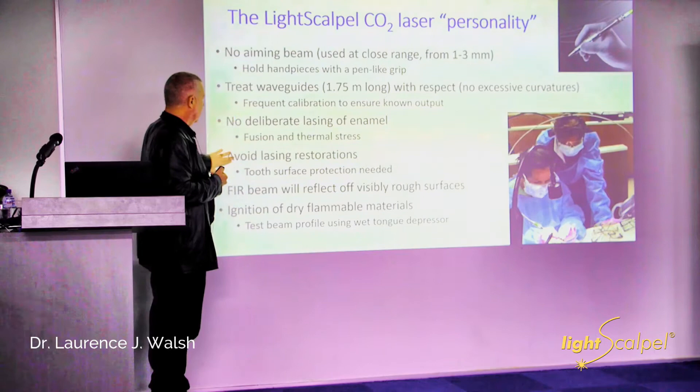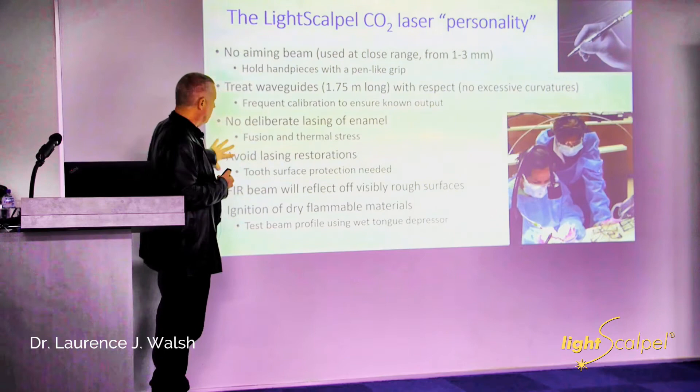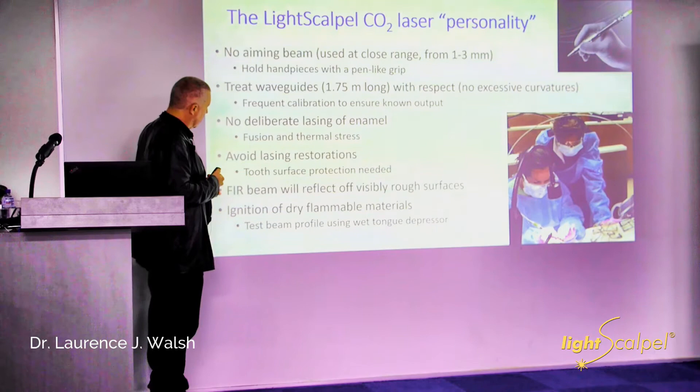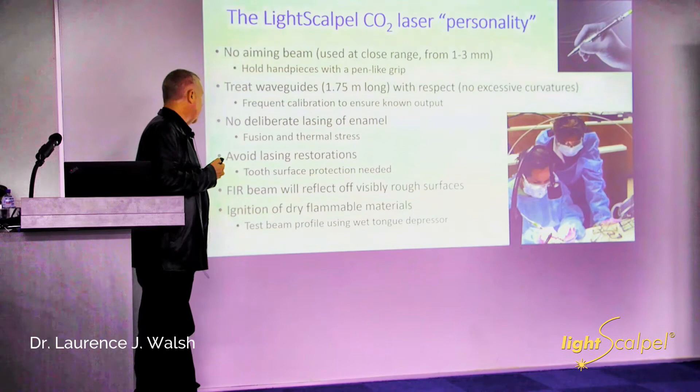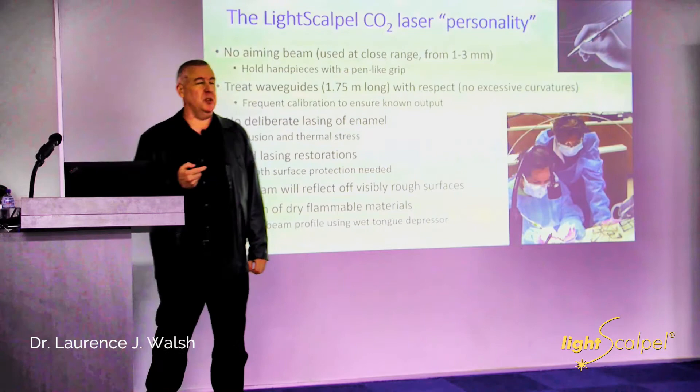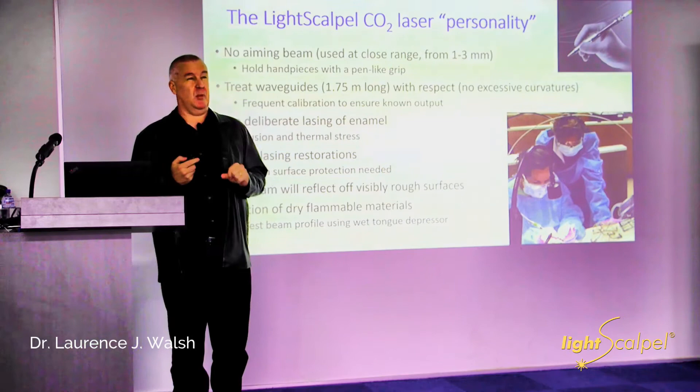With a CO2, you don't deliberately laze enamel — if you do, you heat it up to about 2,000 degrees and it undergoes phase conversions, goes a bit white, and you can create some sub-thermal stress. For surgical modes you'd always want to protect the enamel surface. Similarly, you wouldn't want to be lazing posterior composite restorations because you'll ablate them — so tooth surface protection is important. The beam being in the far infrared reflects off things that aren't necessarily shiny, so something appearing matte could actually reflect the laser.